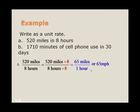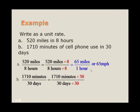The next example, 1710 minutes of cell phone use in 30 days. So let's see if we can reduce this, to figure out how many minutes per day. We'll divide 30 into 1710, and we get 57 minutes per day.